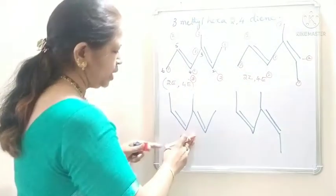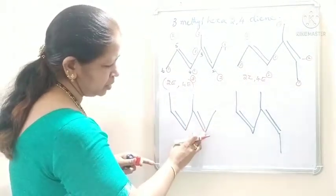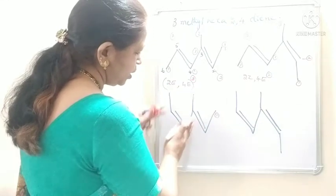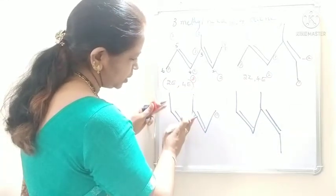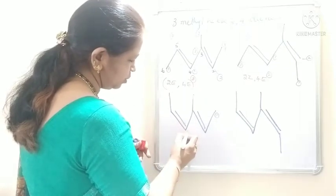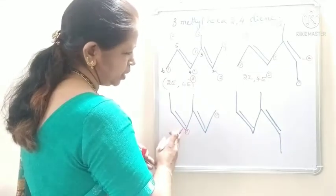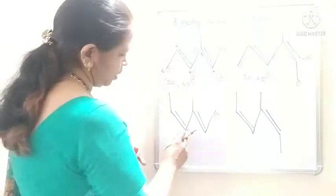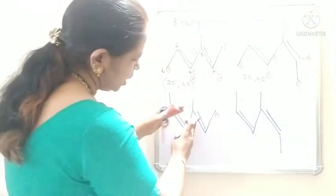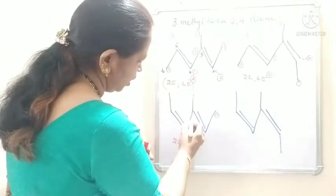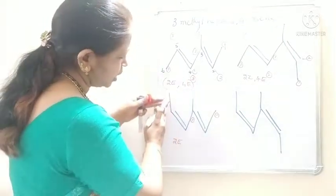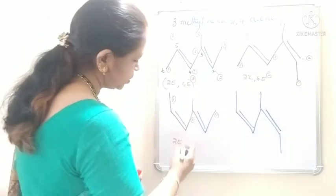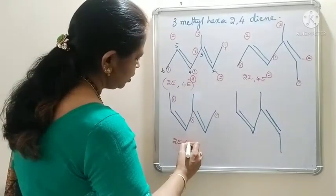Coming to the third structure. If we consider the double bond at the second position, the methyl group is lying upside — first priority. This entire group on the third carbon is lying on the opposite side. First priority groups are lying on the opposite side. So what is the configuration? It is 2E configuration. Coming to the double bond at fourth carbon, this entire group is lying upside and hydrogen down — first priority group. Methyl group is also lying on the same side, upside. So first and first both lying on the same side. It is Z configuration — 4Z.